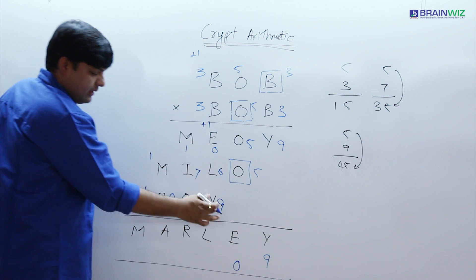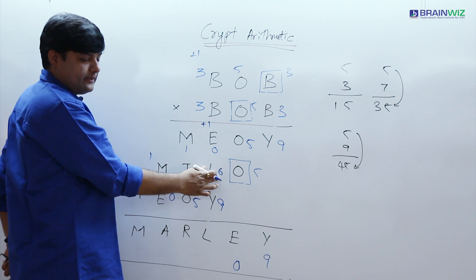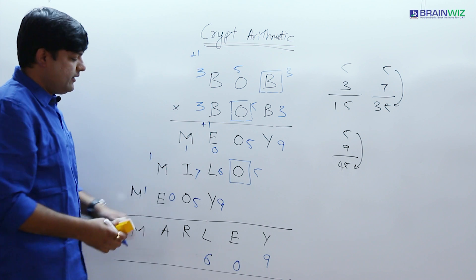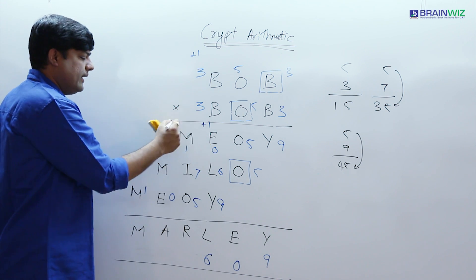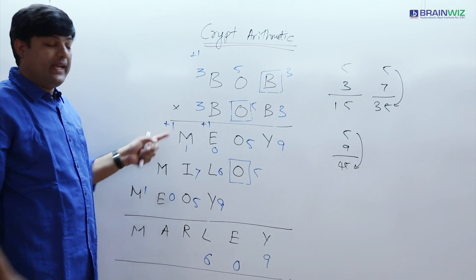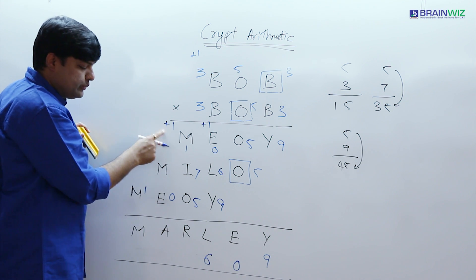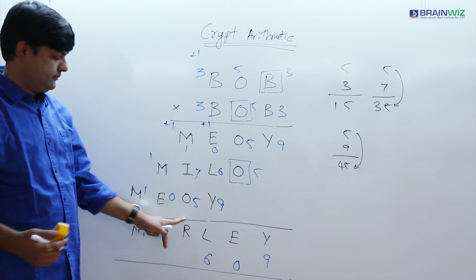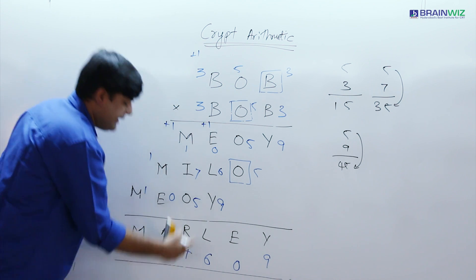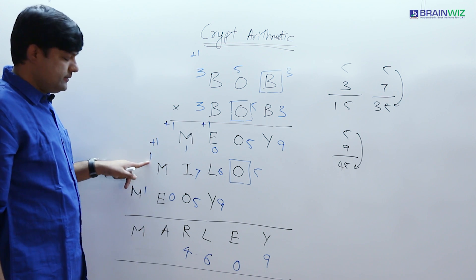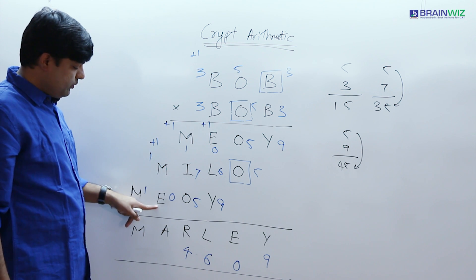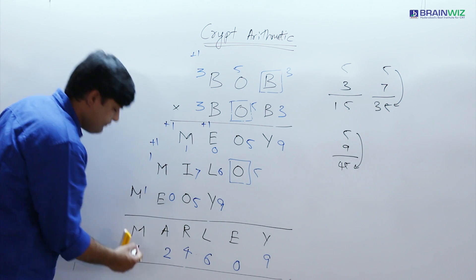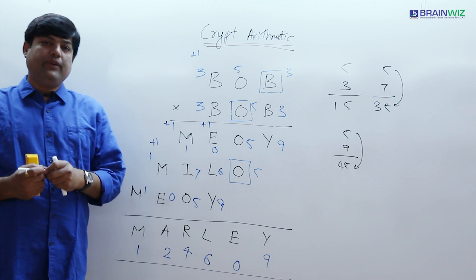9 + 6 = 15 plus 1 = 16, so we get 6 back with 1 carrying. M value is 1. 1 + 1 = 2, 2 + 7 = 9, 9 + 5 = 14, so we have 4 with 1 carrying. Then 1 + 1 = 2, 2 + 0 = 2. There is no further carrying as M value is 1. In this way we have solved this question.